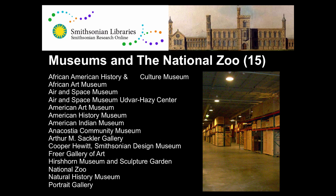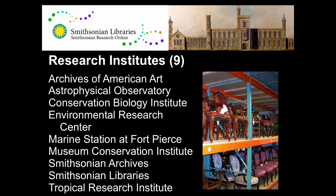The Smithsonian has a number of museums and the National Zoo — depending on how you count, 19 museums and galleries or 15 museums and galleries, and the National Zoo. We also have research institutes. The Smithsonian Libraries is one of the research institutes, as well as other elements including the archives. So there are the museums that are the more public component, and then the research activities that happen more behind the scenes.